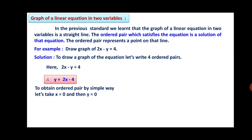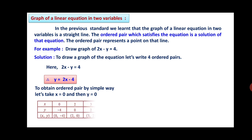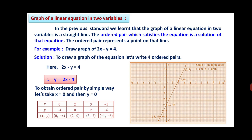To obtain the ordered pairs, we take x equal to 0 and y equal to 0, giving two pairs. The remaining two pairs can be calculated by considering other x values. In the table, if x is 0, y is minus 4. If x is 2, then y is 0, since 2 twos are 4, and 4 minus 4 is 0. If x is 3, then 2 threes are 6, minus 4 gives y equals 2. If x is minus 1, then 2 times minus 1 is minus 2, minus 4 gives y equals minus 6. So the points (0, -4), (2, 0), (3, 2), and (-1, -6) are plotted on the graph. Join these points and you get a straight line.